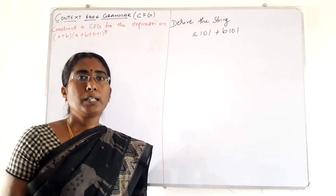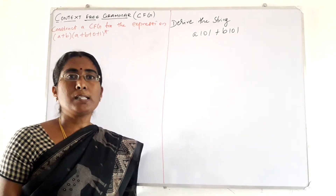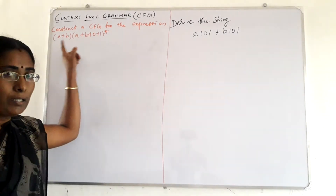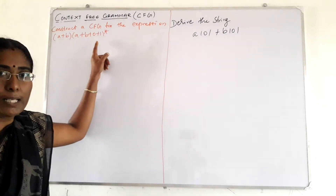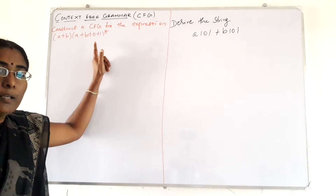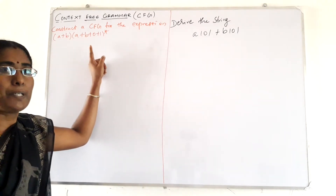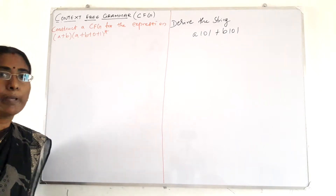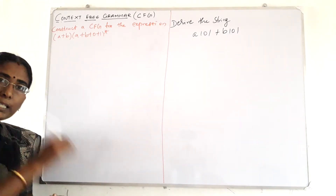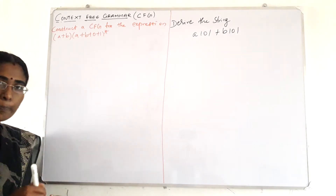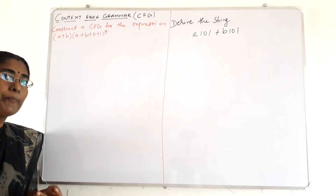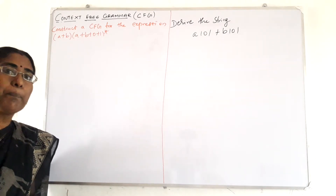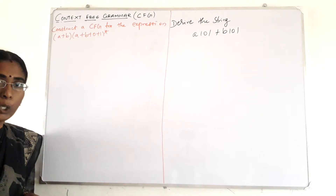Now we will construct a CFG for the expression A plus B, A plus B plus 0 plus 1, the whole star. The meaning of this expression is: the string should start with either A or B, followed by A or B or 0 or 1 with power star.